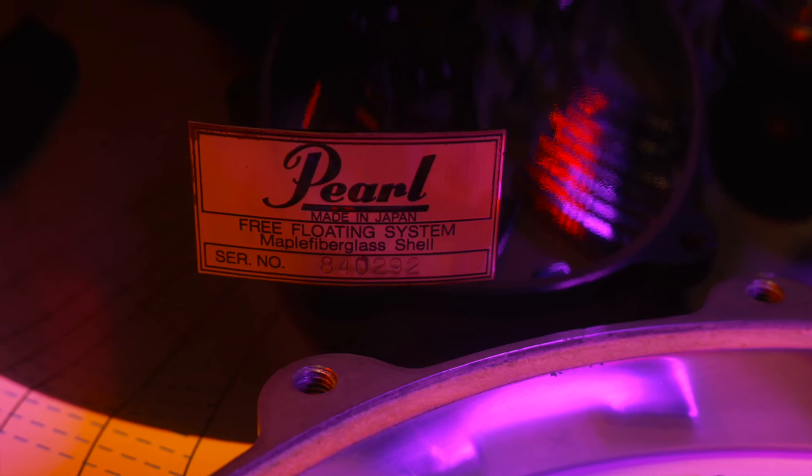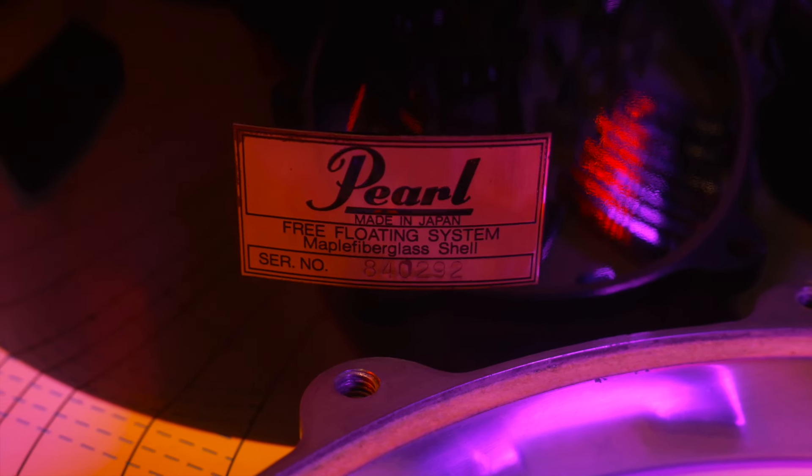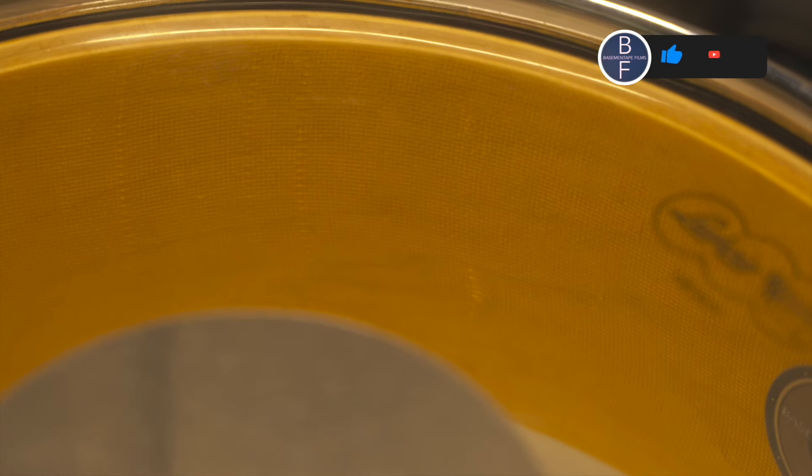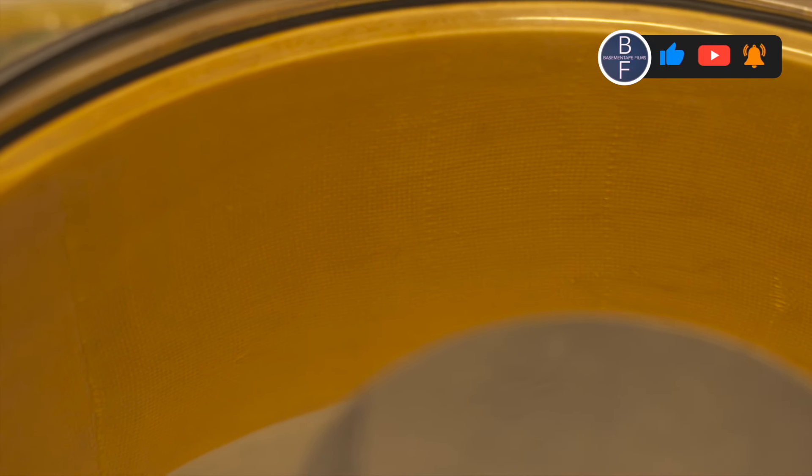The Pearl maple fiberglass shells are maple shells that have been laminated with a fiberglass netting to create a seamless shell. I can tell by the rough surface on the inside of this drum that it was handmade and it's one of a kind. The bearing edge is in excellent shape.